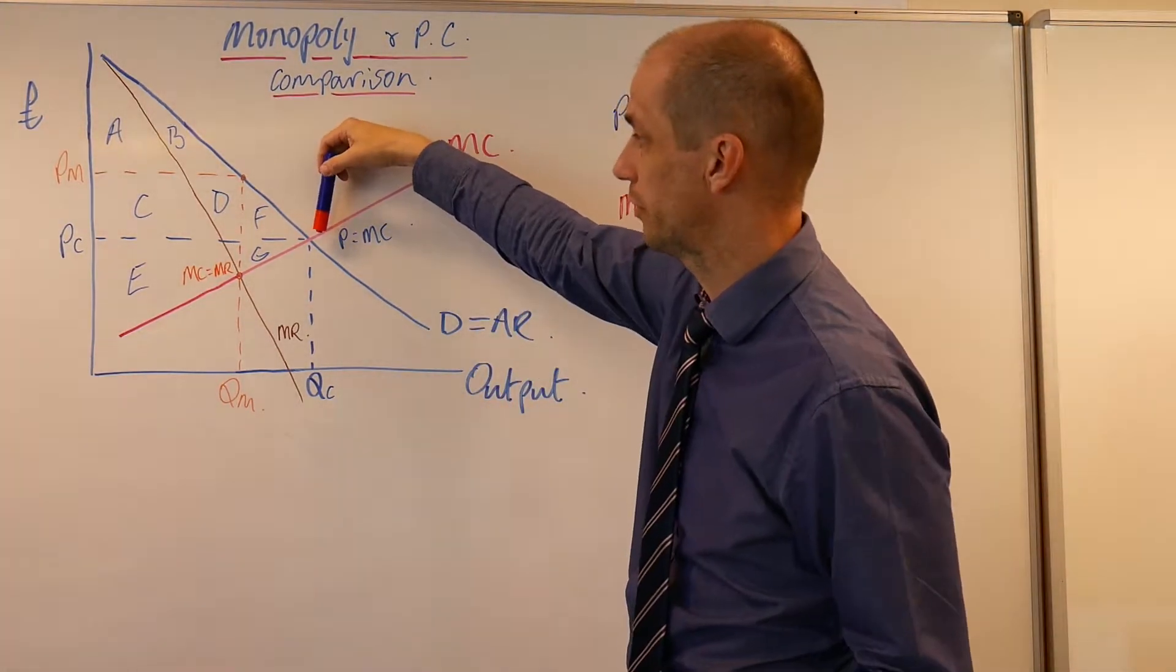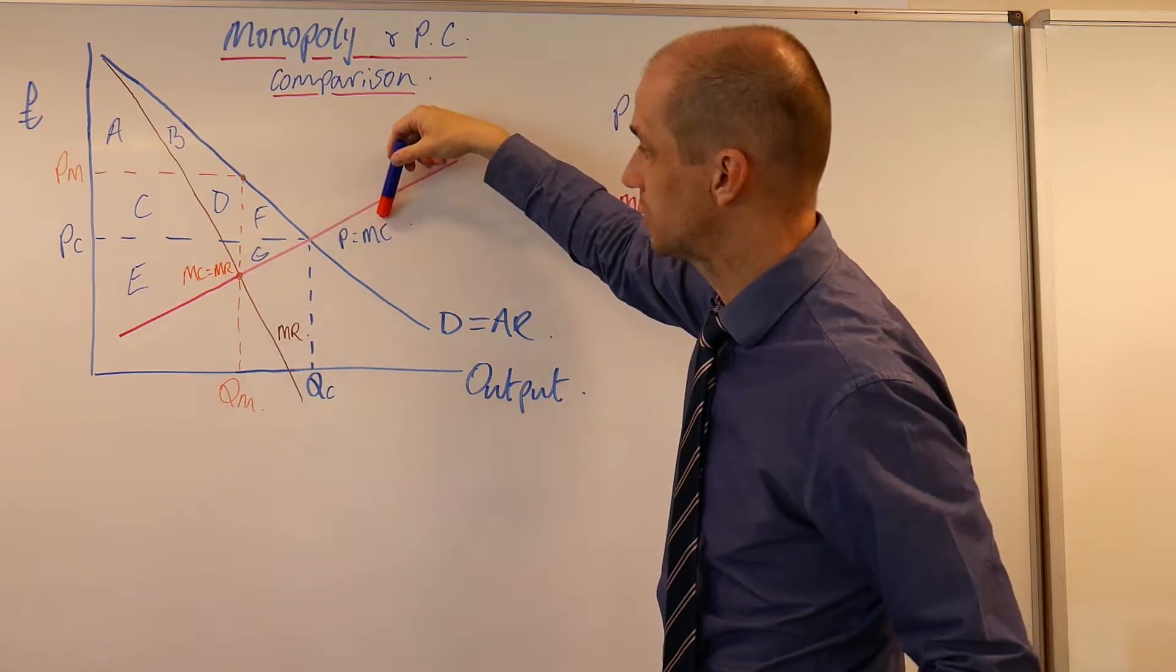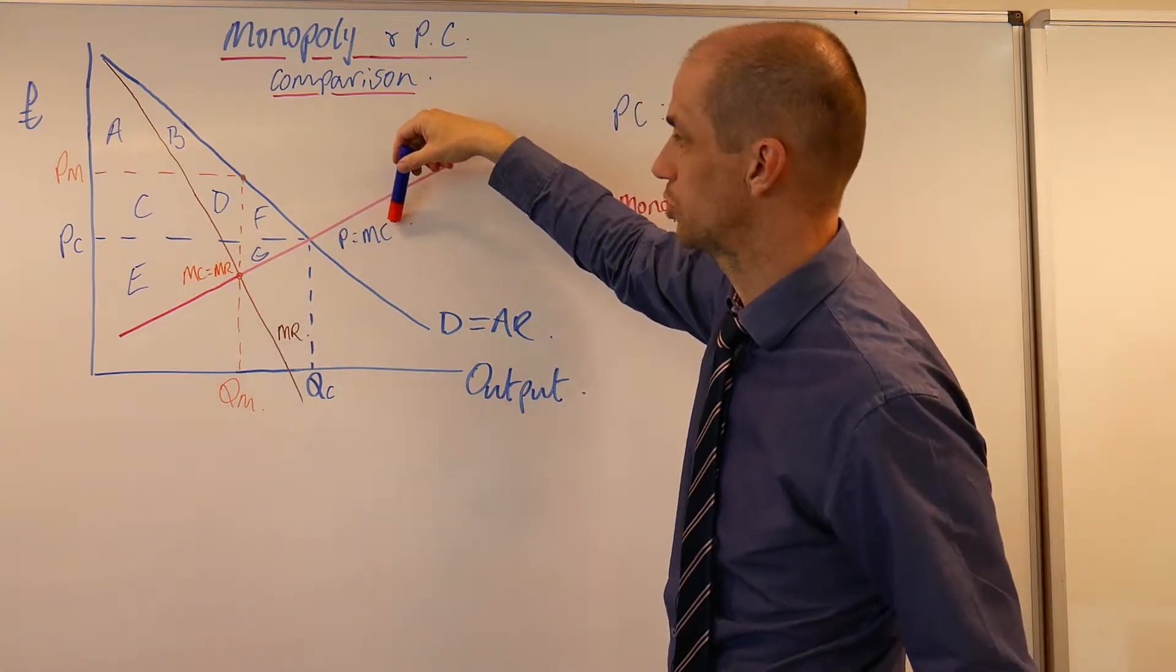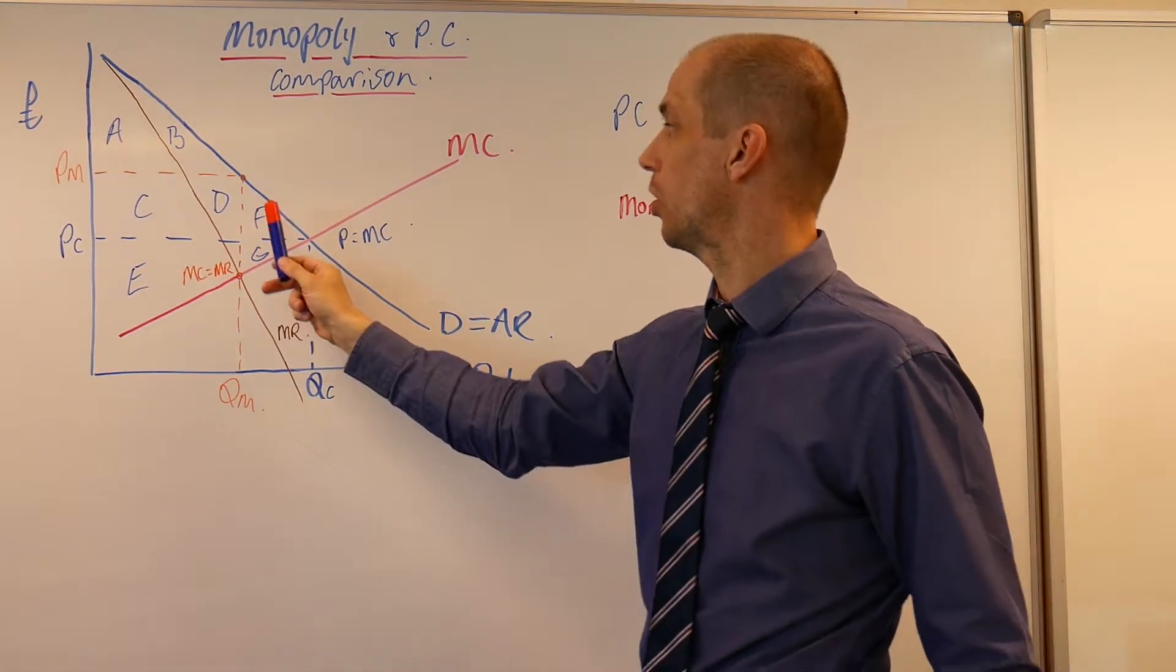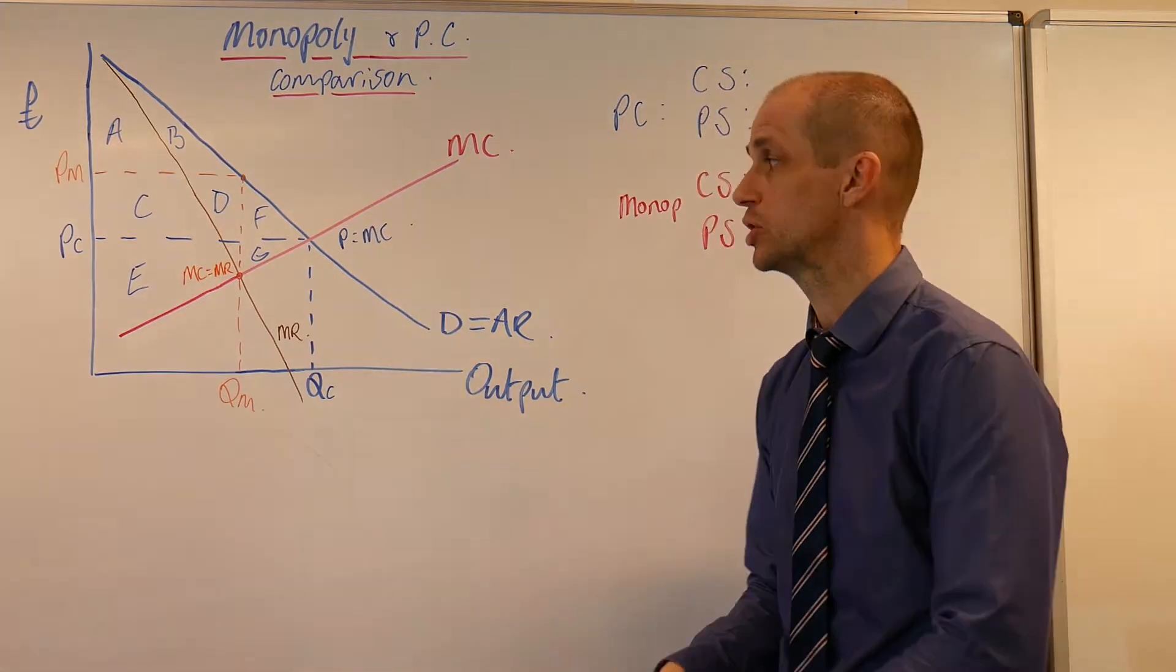A perfectly competitive firm is allocatively efficient where price equals marginal cost, and has normal profits where average cost equals average revenue.